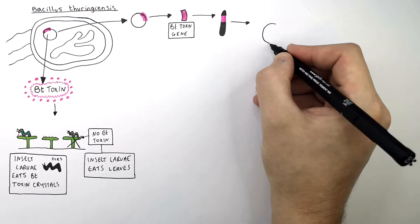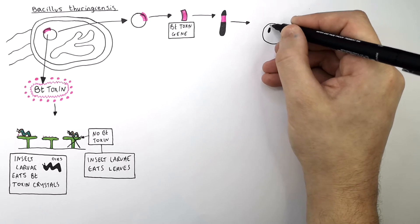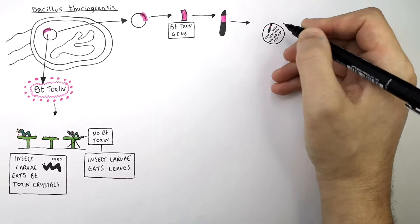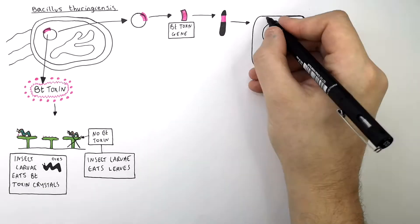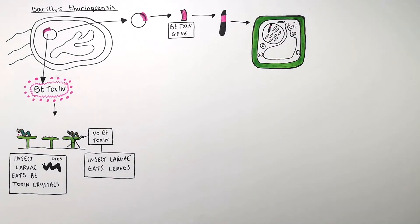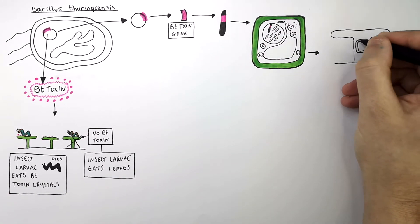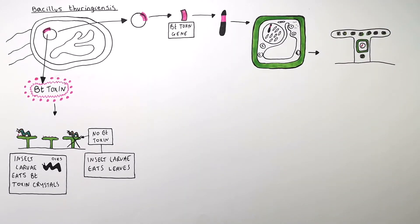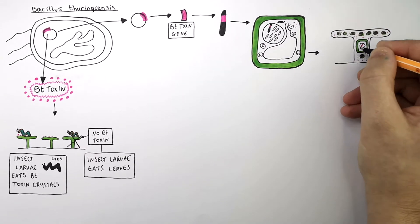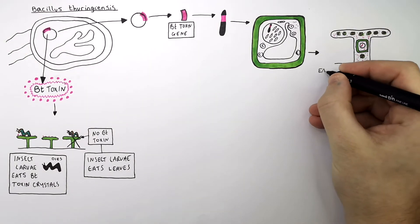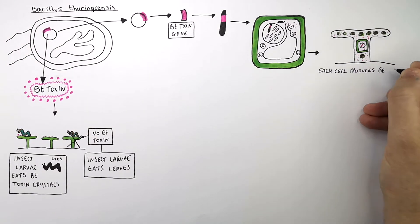As you can see here, this chromosome in this plant cell now has the Bt Toxin gene in its genome. So every plant cell in this plant should now have the Bt Toxin gene in it. If all the cells in this plant have the Bt Toxin gene in its genome, this plant will now produce the Bt Toxin in its cells — so each cell will now produce the Bt Toxin.